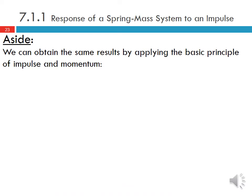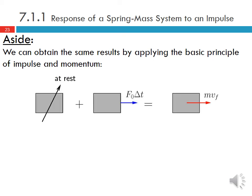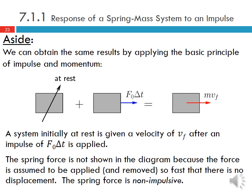We can also obtain the same results by applying the basic principles of impulse and momentum. If the system was initially at rest and we apply impulse F·ΔT, the system moves with some velocity v_F. The spring force is not shown on the diagram because the force is applied and removed so fast that there is no displacement — the spring force is non-impulsive. This is consistent with our earlier analysis where the initial position was zero after the force was removed.